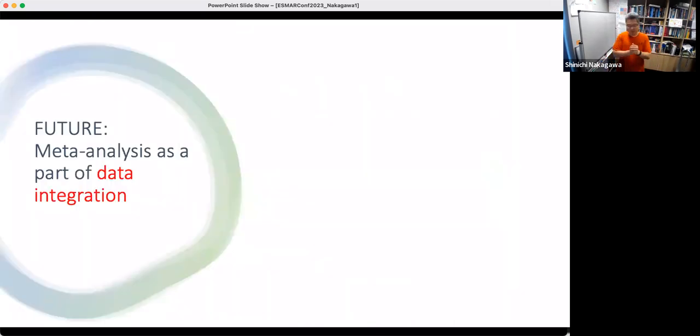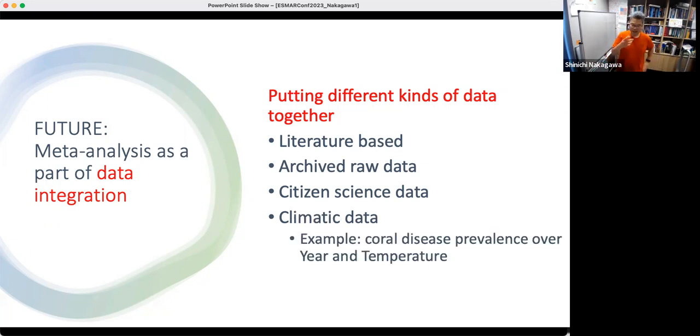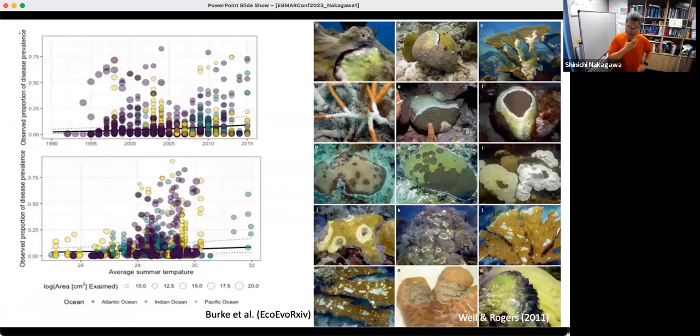So wrapping up this part of the talk, future of meta-analysis, data integration. Putting different data together. We already know literature-based meta-analysis. Now there's lots of archived raw data. This is the IPD meta-analysis, individual participant data analysis. But now we can use citizen science data. Also, you can put together different types of data, such as climate data. I'll quickly tell you one example from our lab.